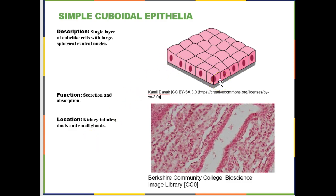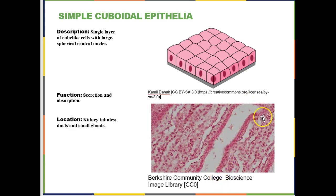Then you have simple cuboidal epithelium: a single layer of cube-shaped cells. They can be adapted either for secretion or absorption, and you find them in the kidneys and also in small glands like parts of your sweat glands and salivary glands — sometimes simple cuboidal and sometimes stratified cuboidal epithelia. In this kidney slide, here is the hollow space and the epithelium lining the surface with small cube-shaped cells.